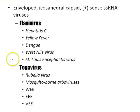Enveloped icosahedral capsid positive-sense single-stranded RNA viruses include the flaviviruses — hepatitis C, yellow fever, dengue, West Nile virus, and St. Louis encephalitis virus — and the togaviruses — rubella virus and mosquito-borne arboviruses including Western equine encephalitis, Eastern equine encephalitis (the most dangerous), and Venezuelan encephalitis virus.